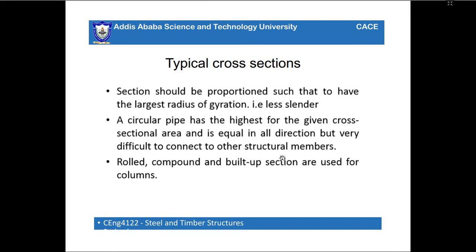A typical cross section should be proportioned to have the least slenderness or largest radius of gyration. Slenderness and radius of gyration are inversely proportional. The circular pipe has the highest radius of gyration for a given cross-sectional area and is equal in all directions, but it is very difficult to connect to other structural members.